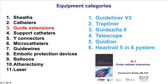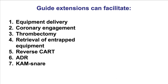Number three — guide extensions — an extremely useful tool, especially for complex PCI. There are various guide extensions that will be discussed in video 30.3. These can help with vessel engagement as well as with delivering equipment down the coronary arteries. They can also be used for thrombectomy, for retrieval of entrapped equipment, to facilitate the reverse CART technique in retrograde CTO PCI, to minimize the risk of subintimal hematoma formation with antegrade dissection reentry, and they can also be used to form a snare, which will be shown in a separate video.